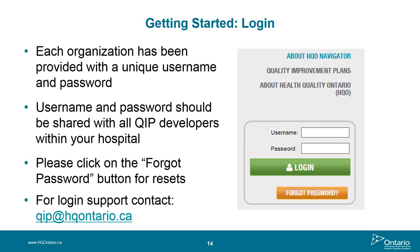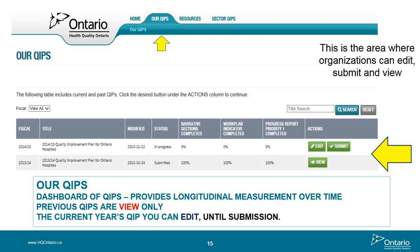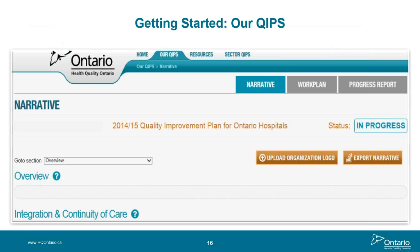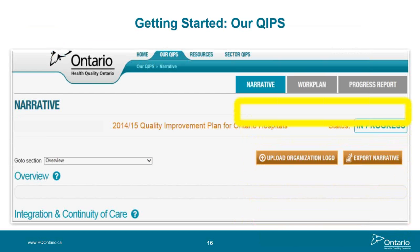The RQIPs page is where you can view your organization's current and past QIPs. Users can check when the QIP was last modified and its status — submitted or in progress. Under the Actions column, you can view previous QIPs or edit and submit your current year's QIP. When you click Edit on your current plan, it brings you to the three components: the Narrative, the Work Plan, and the Progress Report. We recommend beginning with reviewing your current performance in the Progress Report to inform your new plans for the coming year.